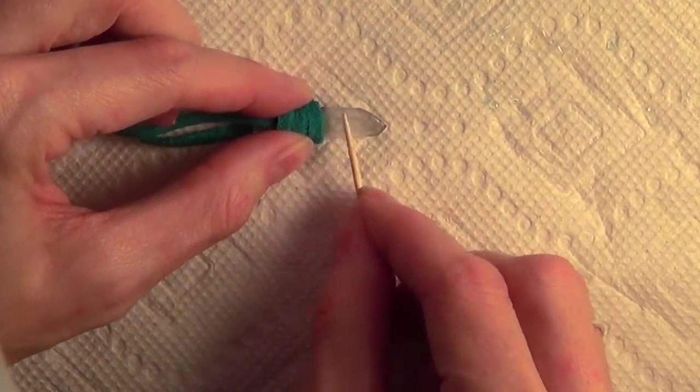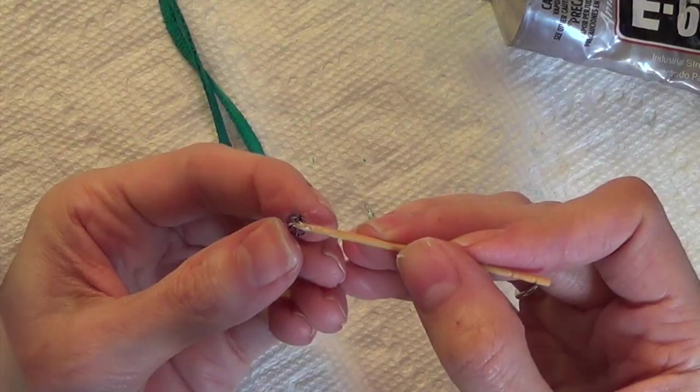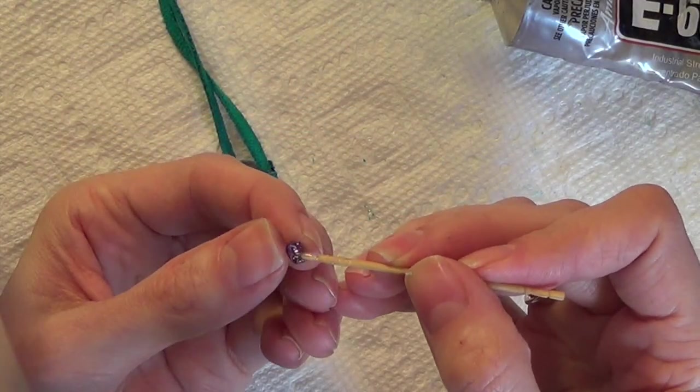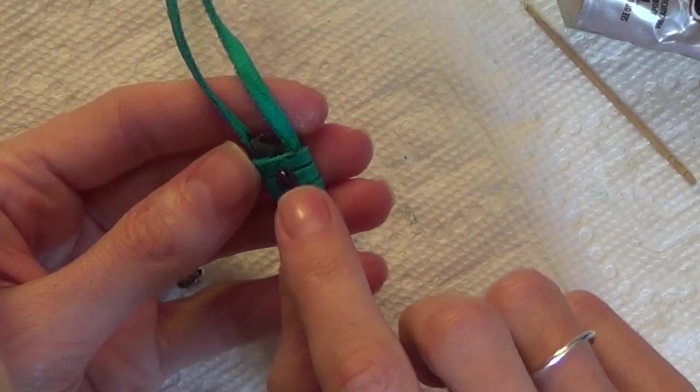At this point, if you've got any residue on the crystal, you can just scrape it off using a toothpick. It also comes out pretty easily after it's completely dry.